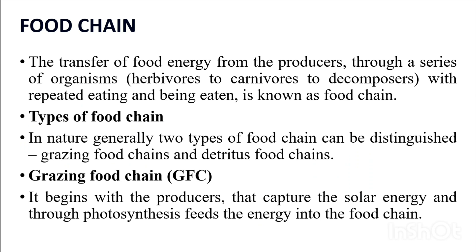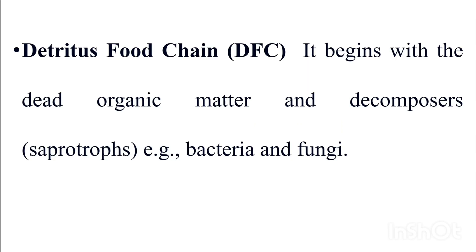A food chain is the transfer of food energy from producer through a series of organisms — from herbivore to carnivore to decomposers — with repeated eating and being eaten. There are two types: grazing food chain, which begins with the producer capturing solar energy and preparing food by photosynthesis; and detritus food chain, which begins with dead organic matter where decomposers — mainly bacteria and fungi — act on it.